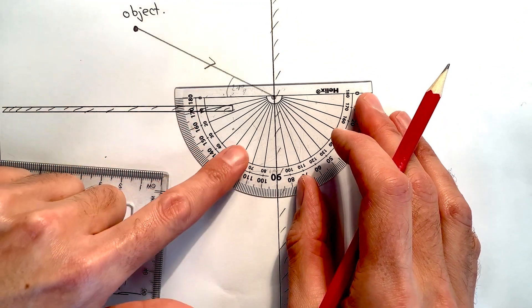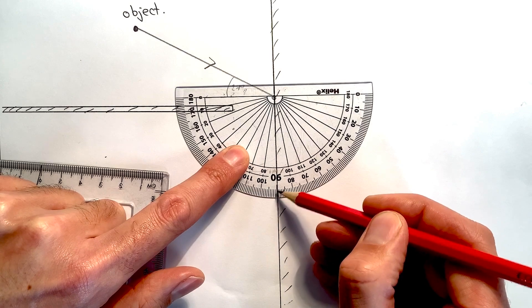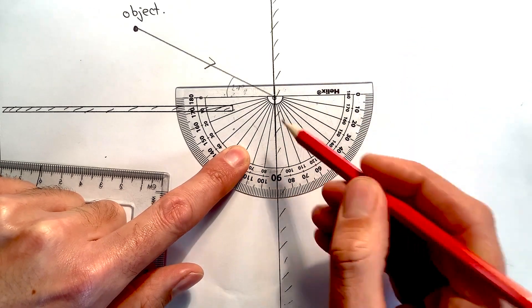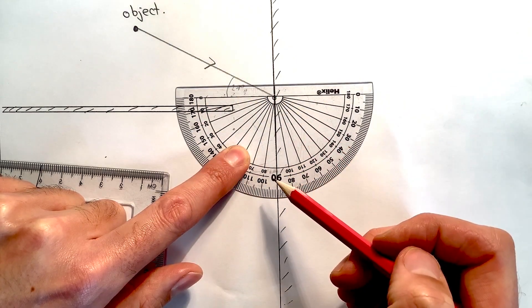Now a little tip to make sure that you get the protractor angled correctly: if you make sure the 90 degrees is lined up with the mirror, then even if you didn't draw your normal in very well, that will keep it in the right place.